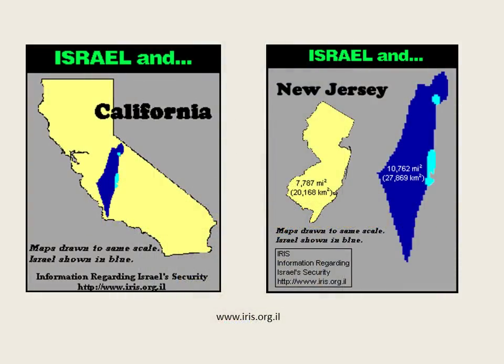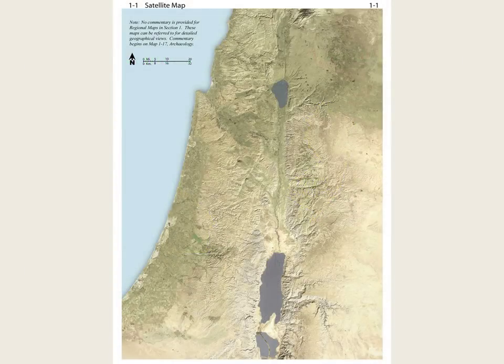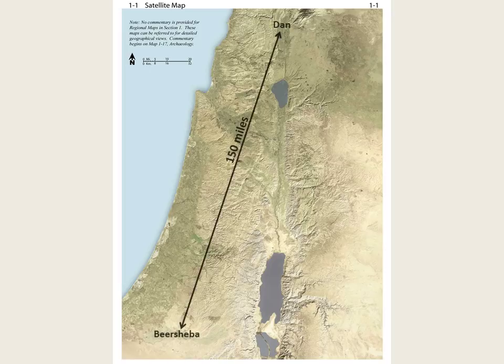This video introduces the basic geography and regions of the land of Israel. We noted in the previous video that the land of Israel is relatively small — about the same size as the state of New Jersey, the fifth smallest state in the United States. On map 1-1 in the Satellite Bible Atlas, note that the heartland of Israel, from Dan to Beersheba, is only 150 miles long.